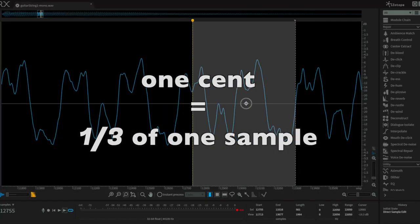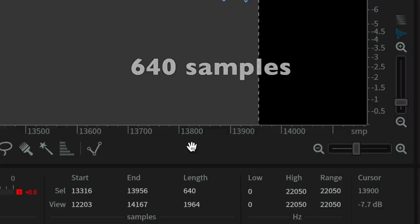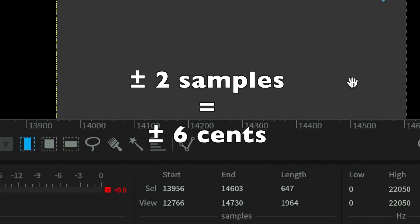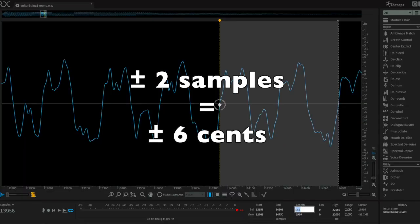But this sound wave varies by about plus or minus two or three samples around its average wavelength. So its actual wavelength is varying in the range of plus or minus about six cents from the average.